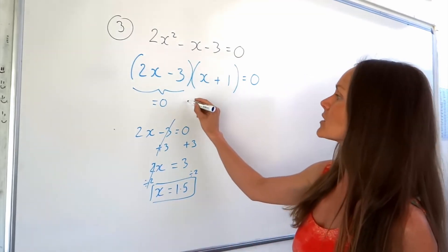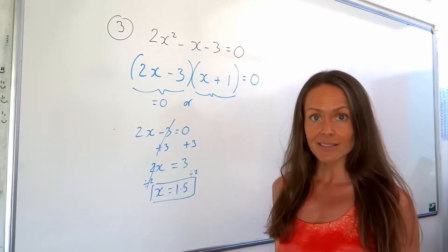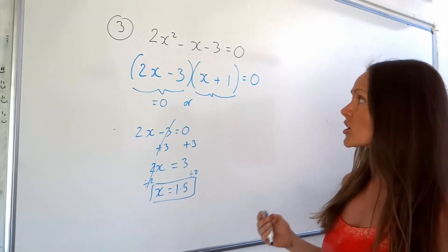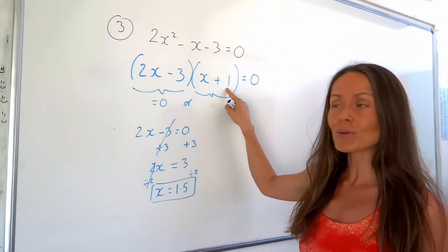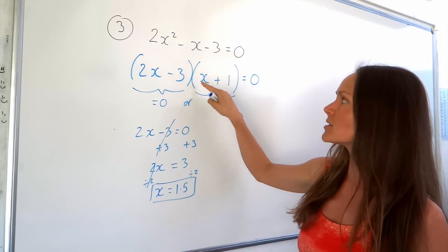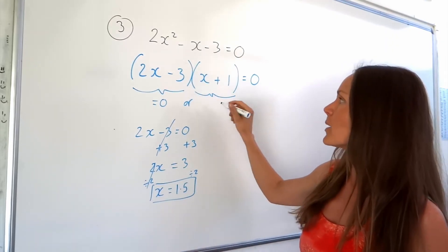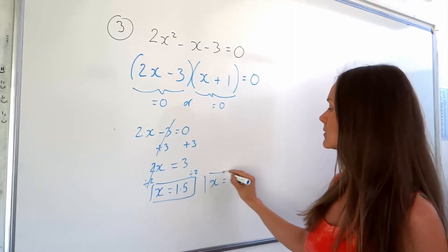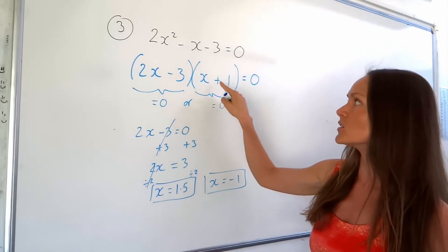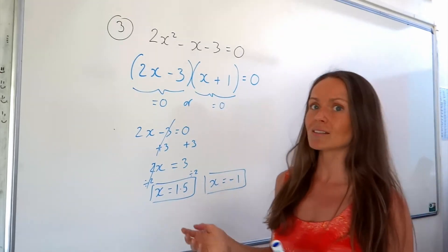Then we consider what happens if this bracket is 0 instead. Just like earlier, when it's a single x the quick way is: it's just this same number but the opposite sign. So that gives us x equals minus 1 — which makes sense because minus 1 plus 1 is 0. So I've solved the quadratic. I've got one more hard one to finish.